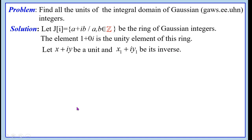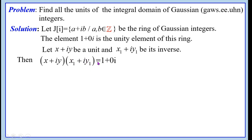We know that units of a commutative ring with unity are the elements of the ring which possess a multiplicative inverse. Therefore, we write (x + iy)(x₁ + iy₁) = 1, where 1 is the unity element of J(i). Our aim is to find the values of x and y, since we have assumed x + iy to be a unit.